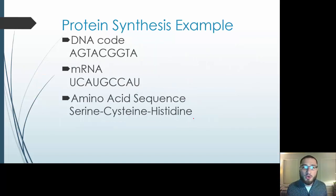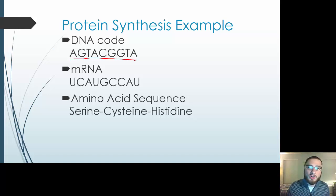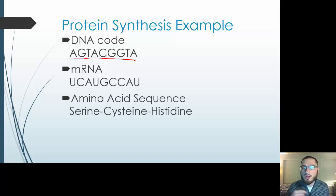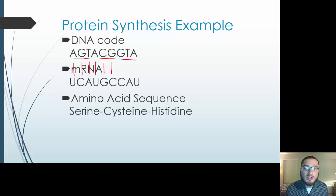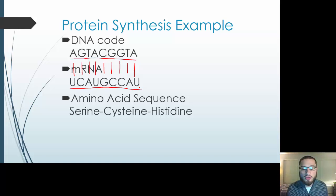Just as an example of protein synthesis: say our DNA gene goes A, G, T, A, C, G, G, T, A. Using complementary base pairing for mRNA — where T's are replaced by U's — A goes with U, G with C, T with A, A with U, C with G, G with C, G with C, T with A, and A with U. Now we have our mRNA instructions to send out of the nucleus to the ribosomes. The ribosomes use these instructions to know what amino acids to use to build proteins.